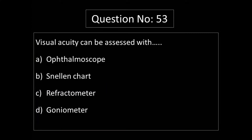Question number 53: Visual acuity can be assessed with Option A: ophthalmoscope. Option B: Snellen chart. Option C: refractometer. Option D: goniometer. The answer is Option B: Snellen chart.